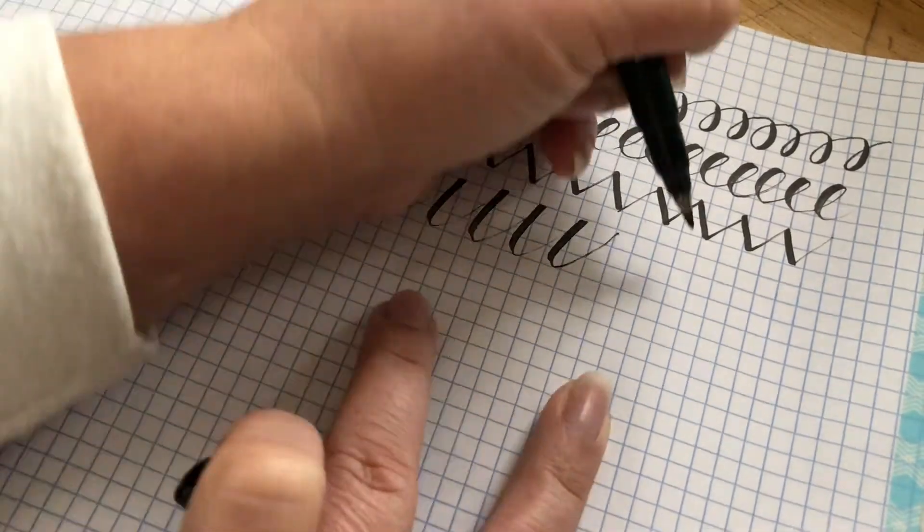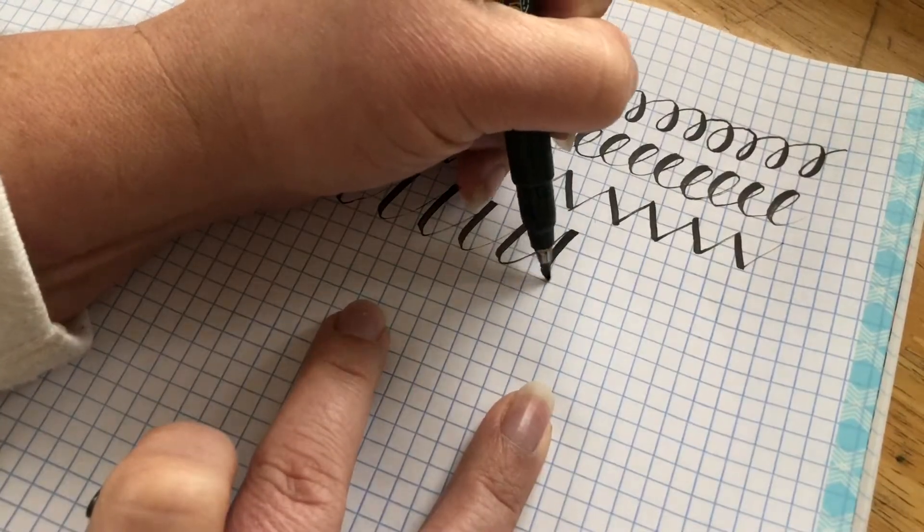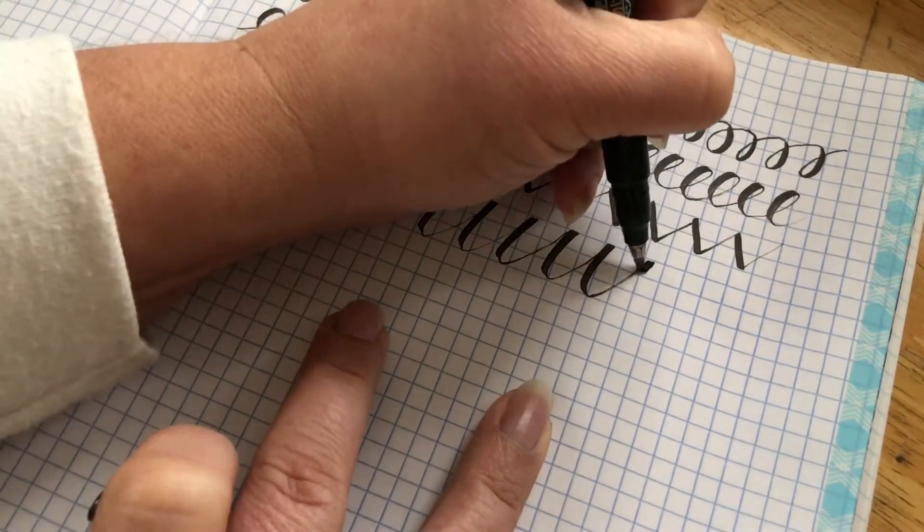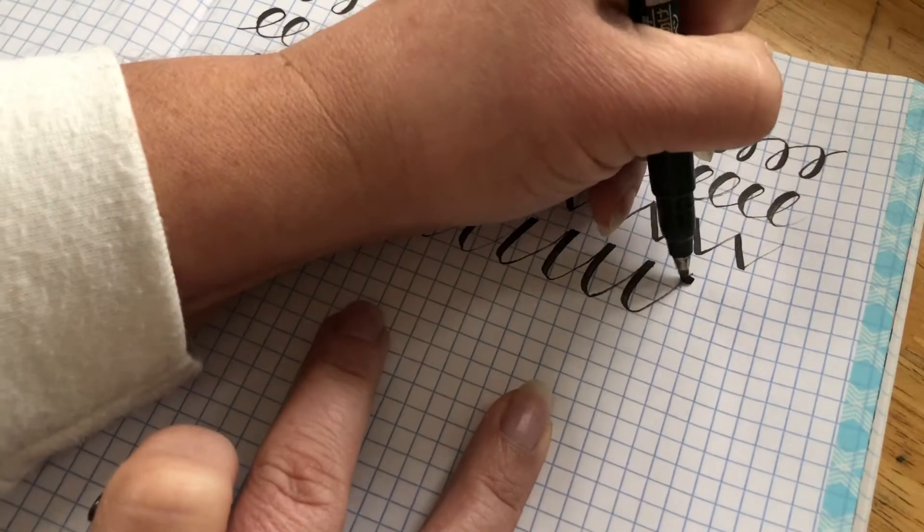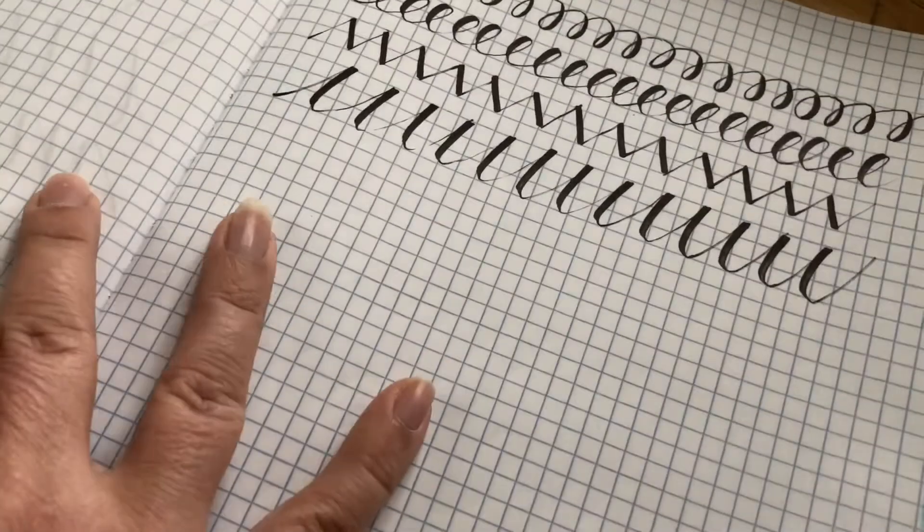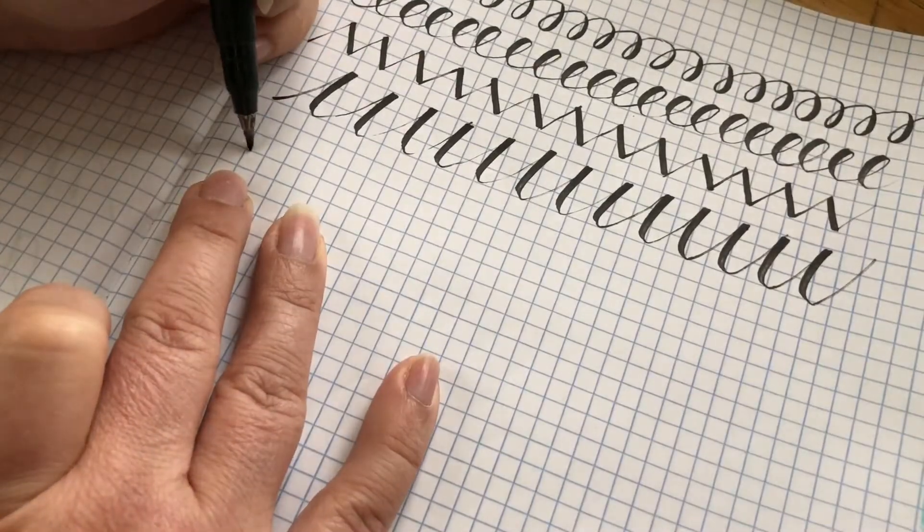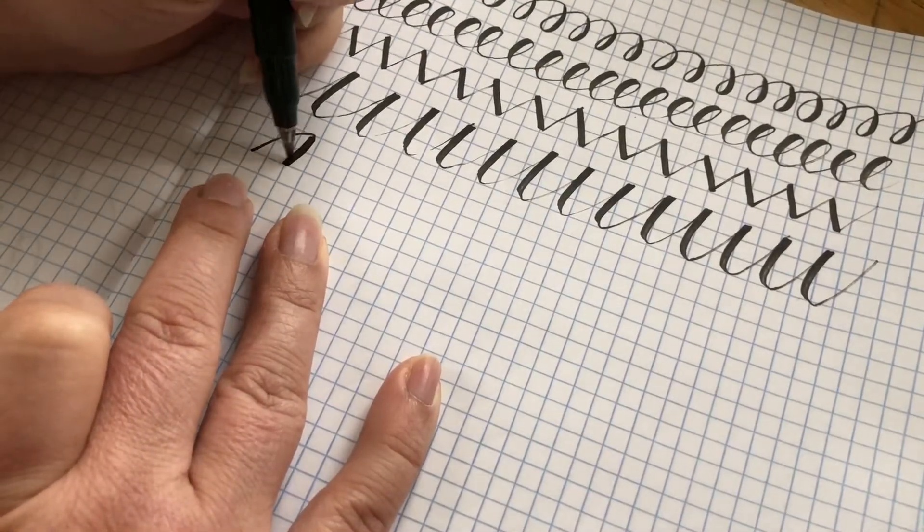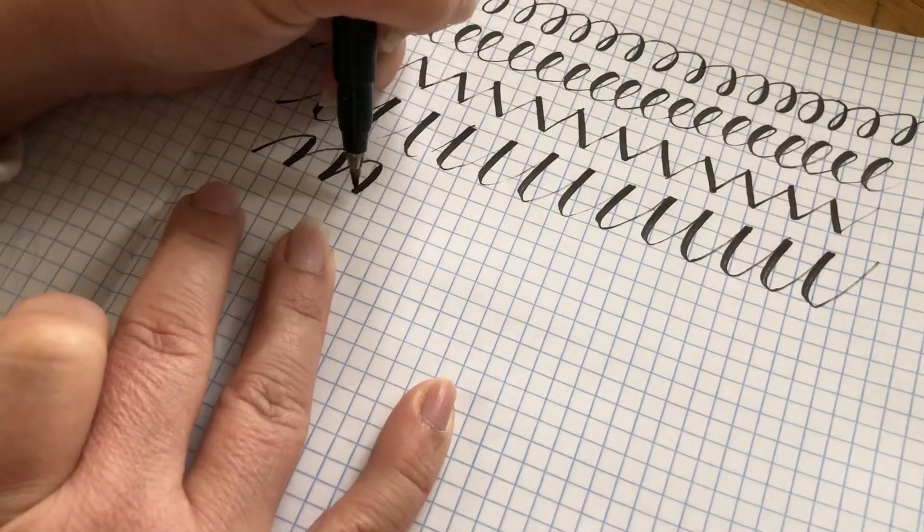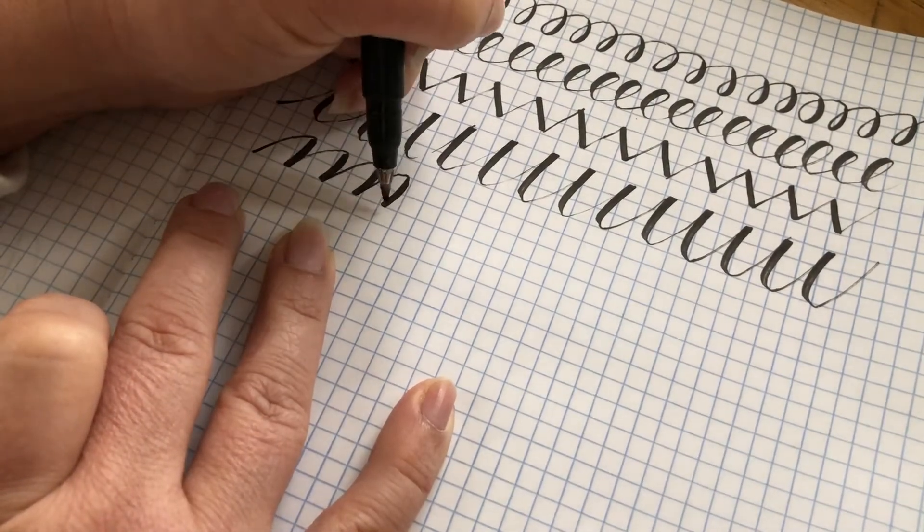The more we practice these exercises, the more consistent our writing and strokes will become. Next up is our overturned bumps. Light pressure on the way up, heavier pressure to hit that baseline.